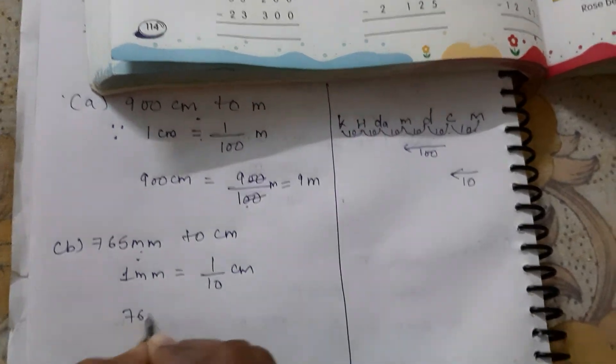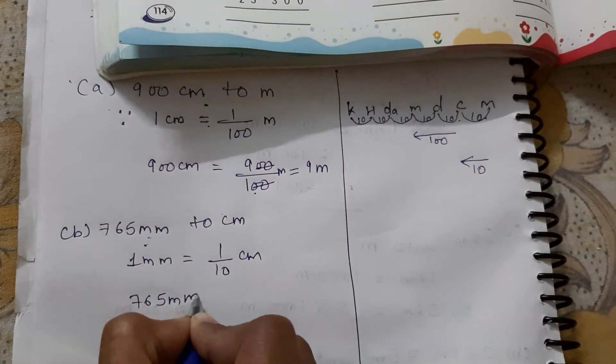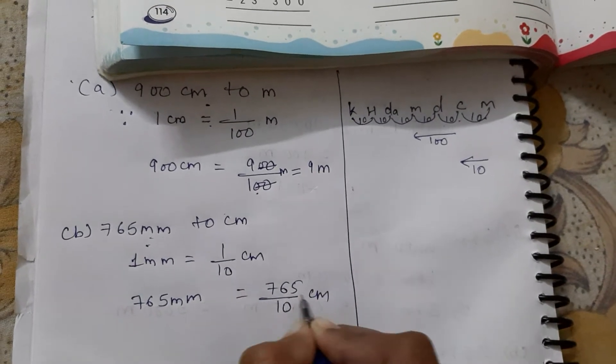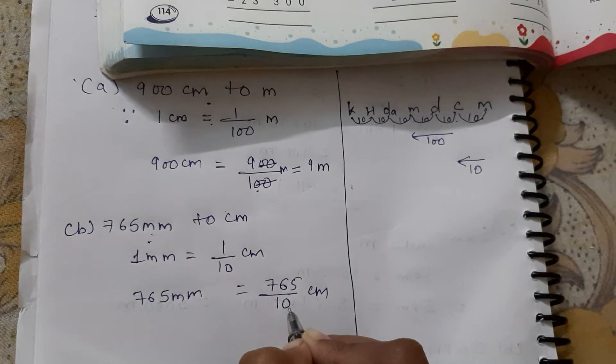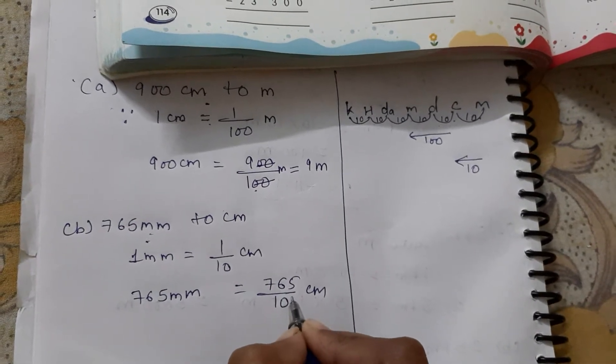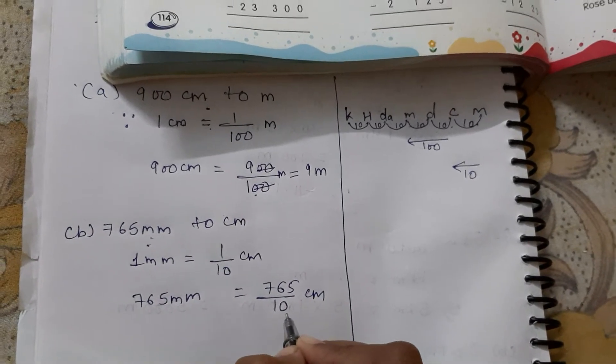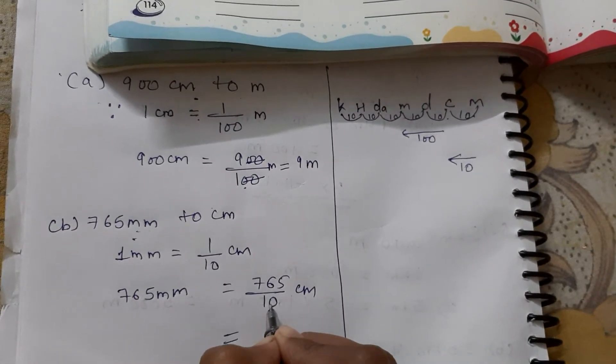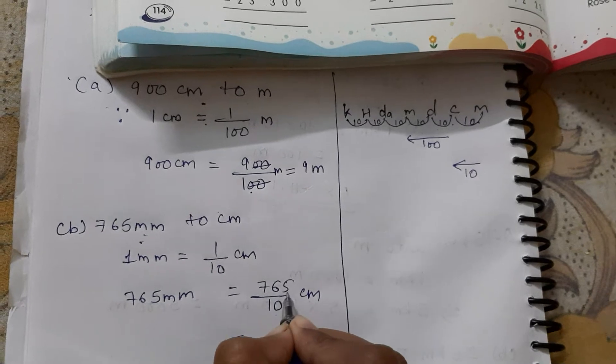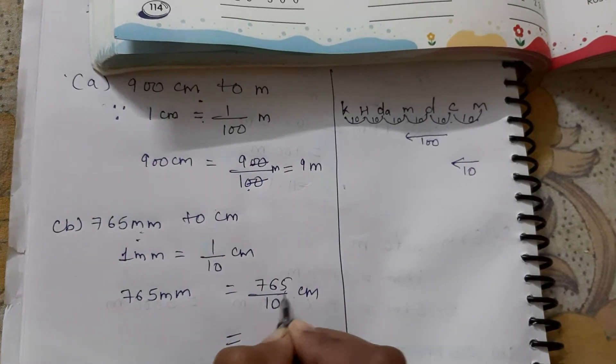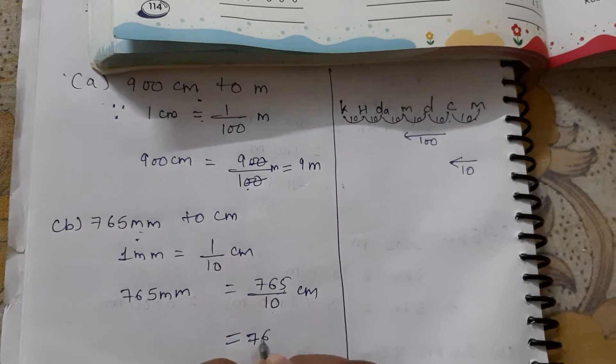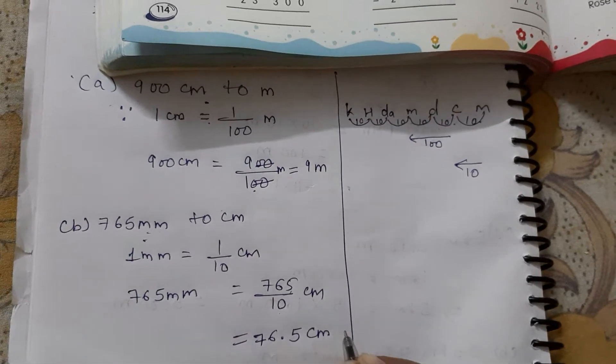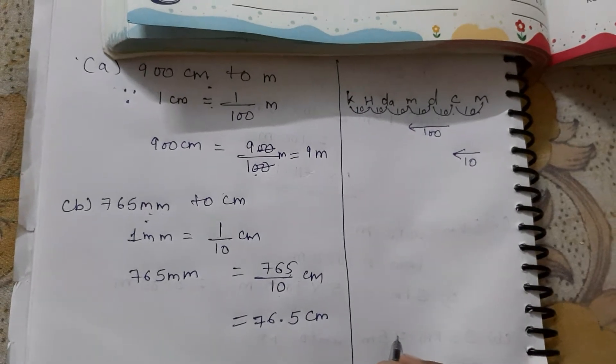So 765 millimeter, how many times? According to the zeros, leave the digit from back side. Leave one digit from the back. Now put the point here: 76.5 centimeter. So that answer is 76.5 centimeter.